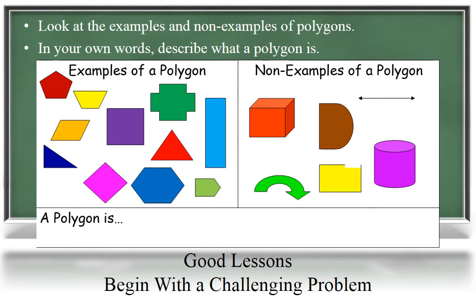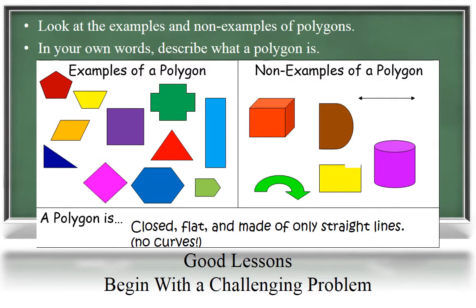Looking at the examples and non-examples, a student may describe a polygon as being closed, flat, and made of only straight sides. It is important for children to develop their own descriptions of geometric terms and not simply be given definitions.